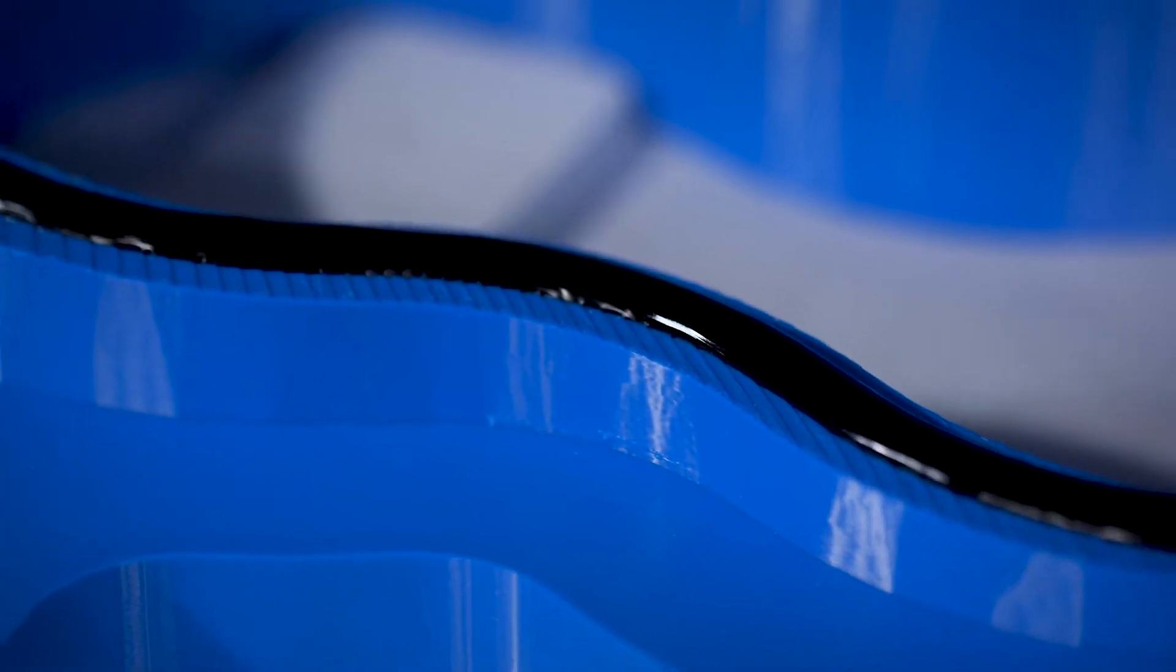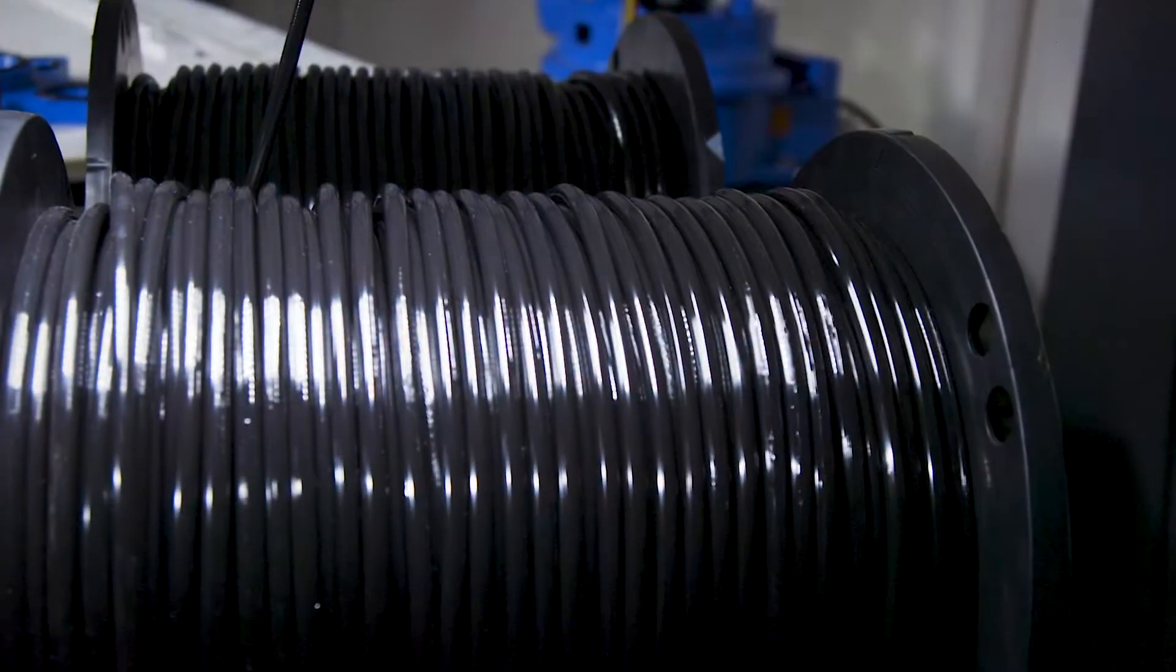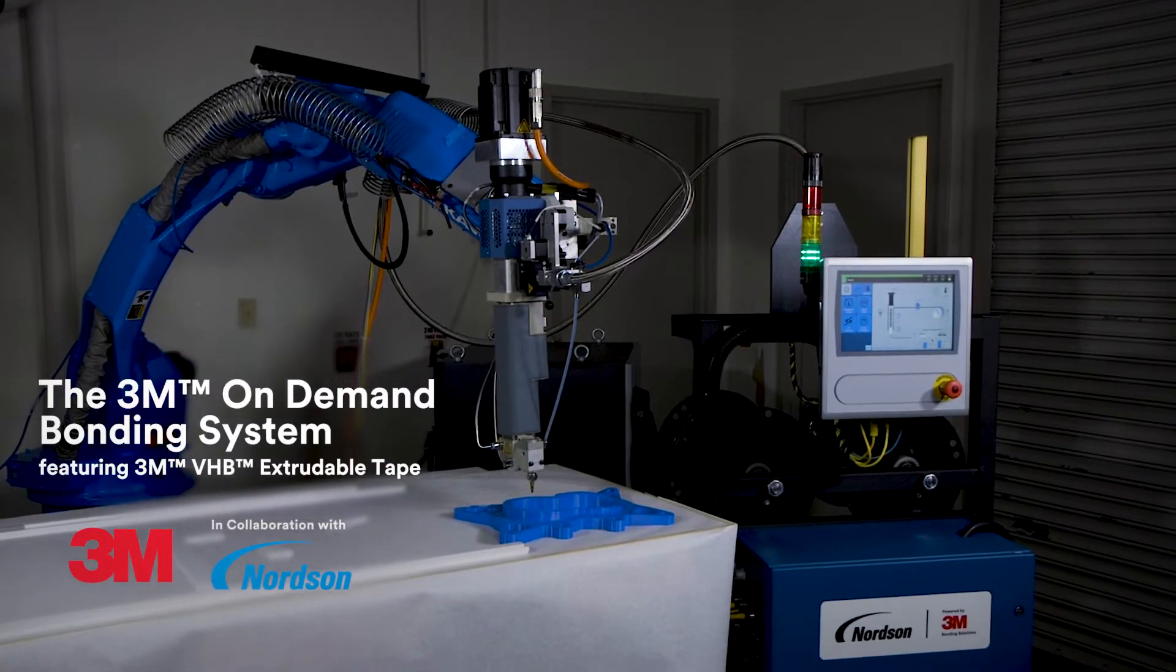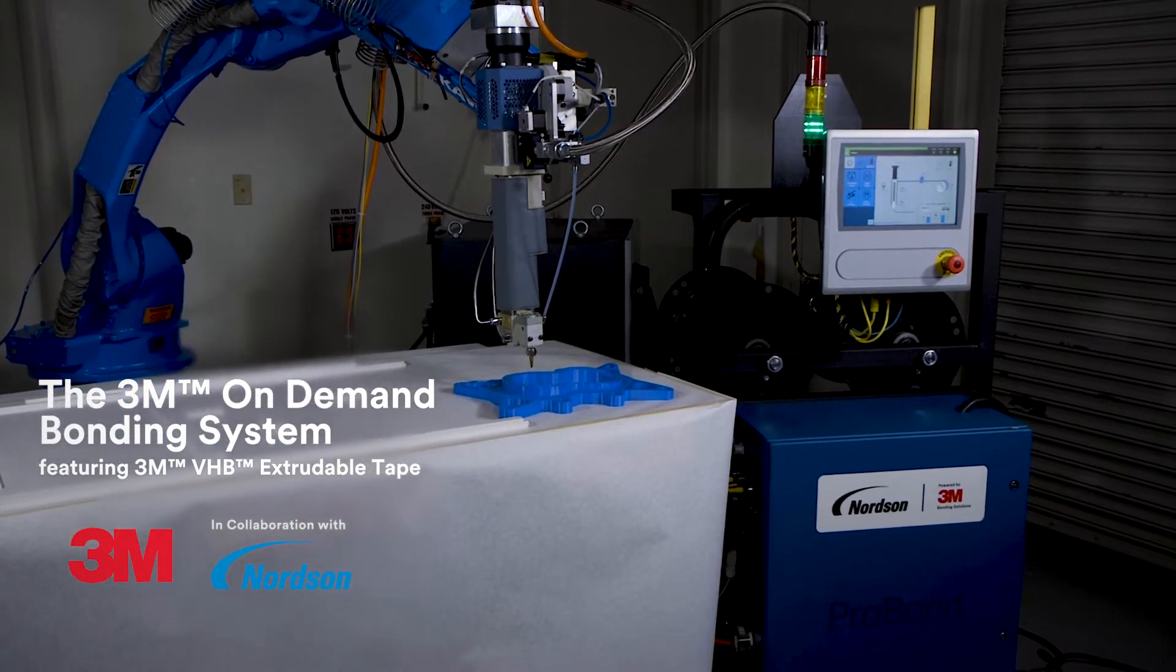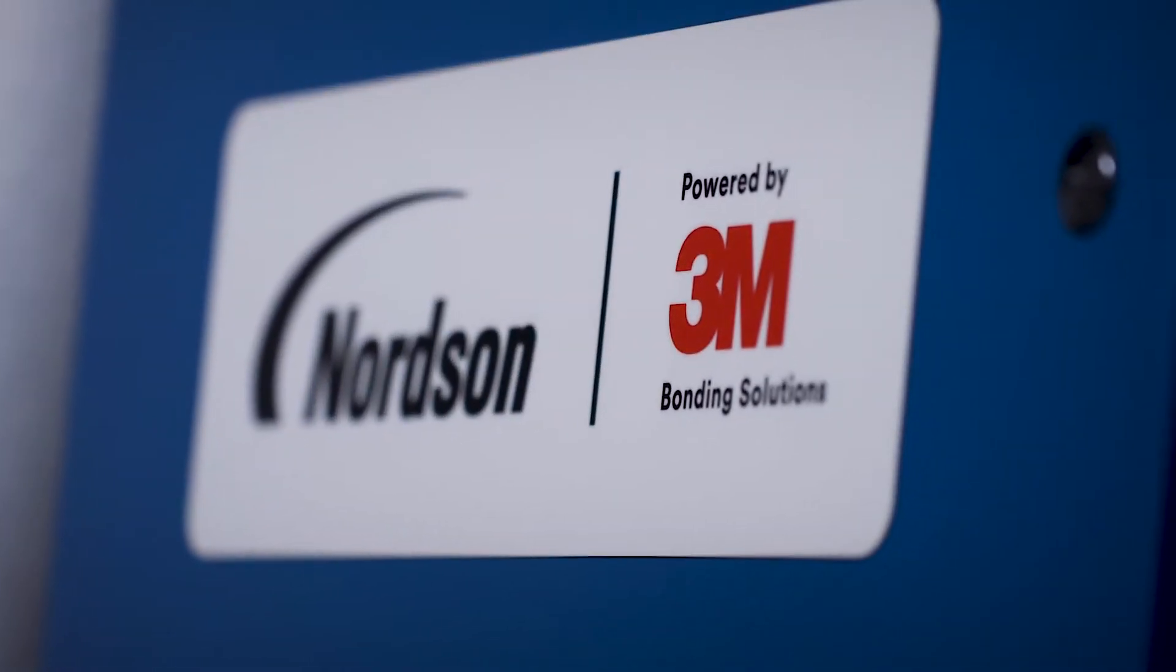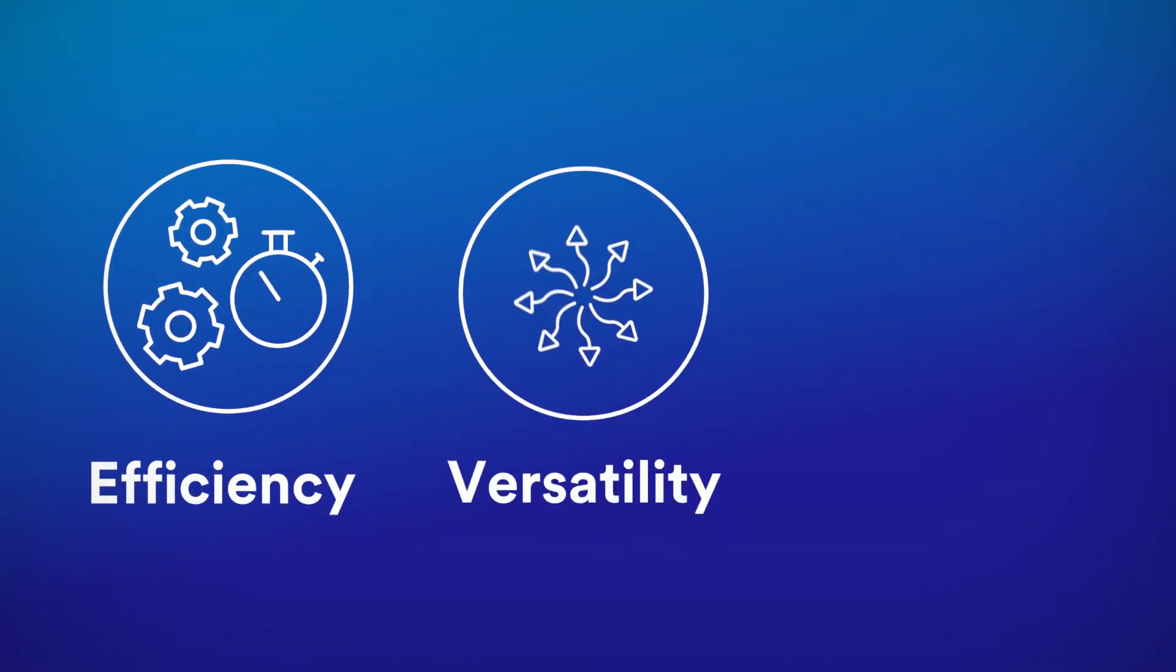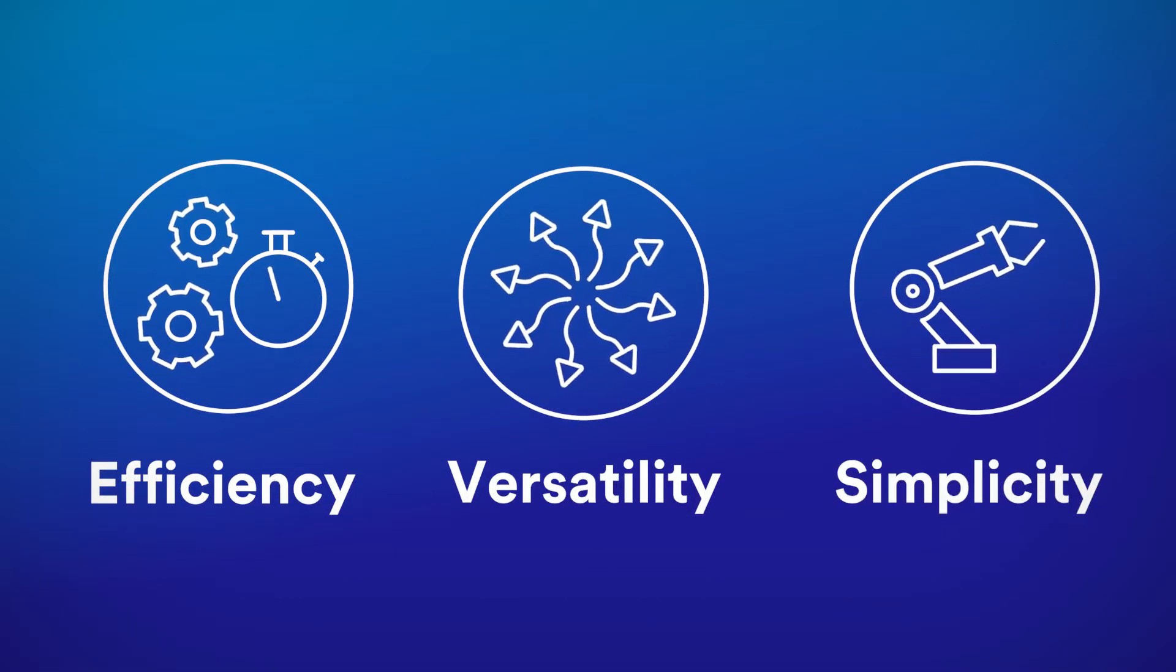A bond beyond. Introducing a whole new way to think about bonding: the 3M On-Demand Bonding System featuring 3M VHB Extrudable Tape. In collaboration with Nordson, this automated system brings your operation the efficiency, versatility, and simplicity to help deliver your customers the next generation of innovation.